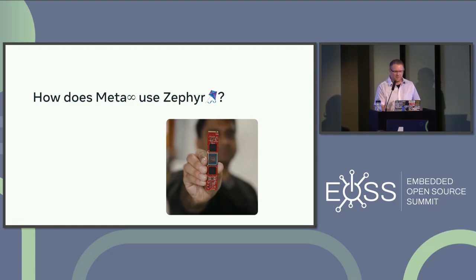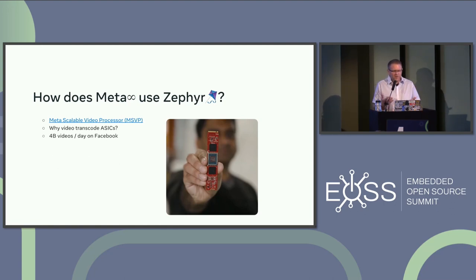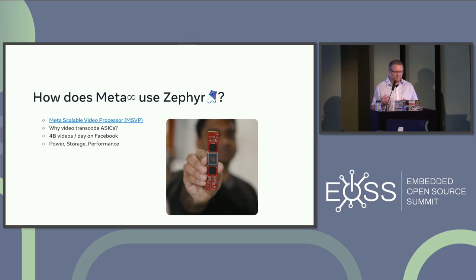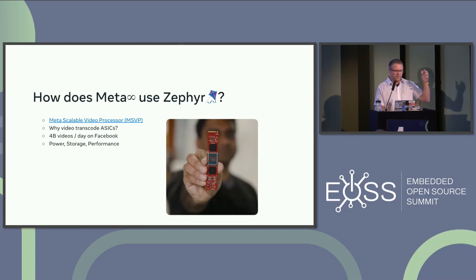We have a published engineering document about that. We have four billion video views per day on Facebook, which is a huge amount of power consumption — transcoding different resolutions and so on. Better codecs give you better storage metrics, and we don't want CPUs mindlessly burning through cycles, so we use an ASIC for acceleration in the infrastructure world.